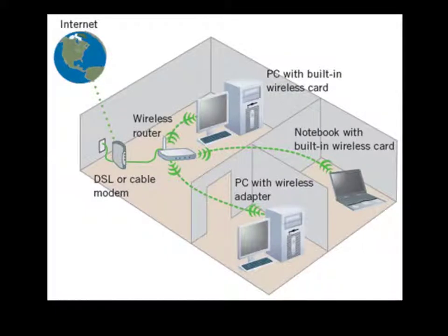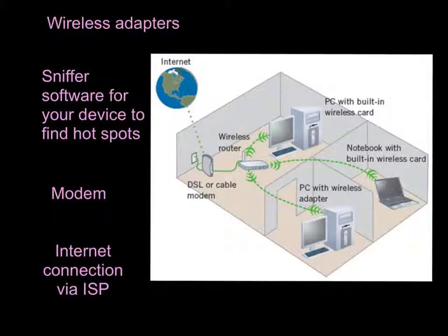Looking at this home network diagram, we see three computers each built with a wireless card. They connect wirelessly to a wireless router, which then connects to a DSL or cable modem. Most commonly now, a wireless cable modem combines both into one device. From there, we use our internet service provider to get to the internet. The four main things you need to connect: wireless adapters for your computers, sniffer software so your device can find the wireless router, a modem, and an internet service provider such as Comcast or Verizon.